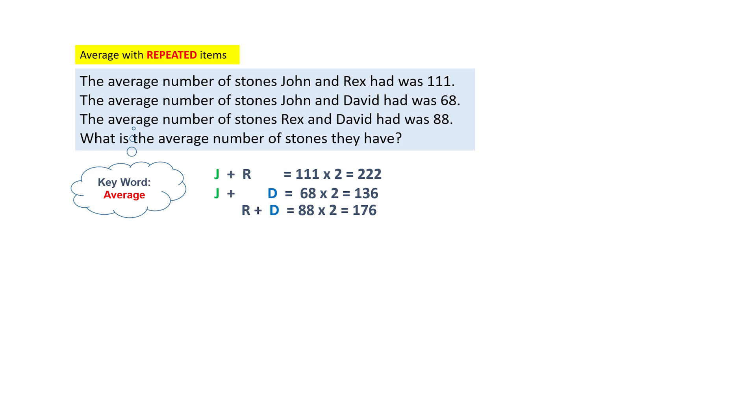Take a careful look at how I have stacked John's letter together, J and J in one column, R and R in the second column, and D and D on the third column. This is important because it helps you to see that there are two J's, two R's and two D's in this sum.